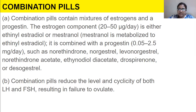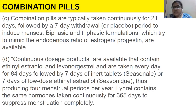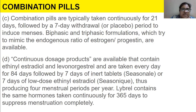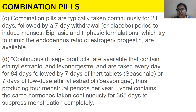Combination pills reduce the level and cyclicity of both luteinizing hormone and follicle-stimulating hormone, resulting in failure to ovulate. Combination pills are typically taken continuously for 21 days followed by a seven-day withdrawal or placebo period to induce menses. Biphasic or triphasic formulations, which try to mimic the endogenous ratio of estrogen and progestin, are also available.